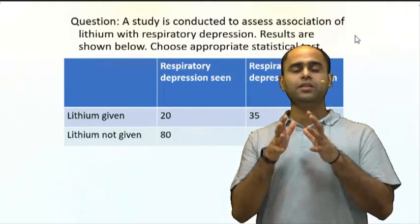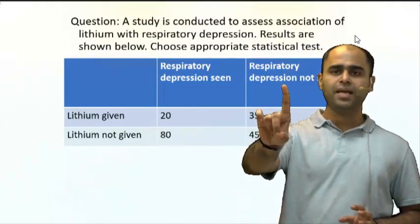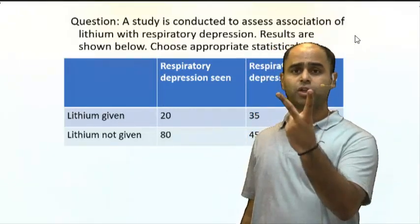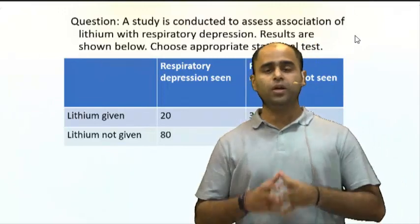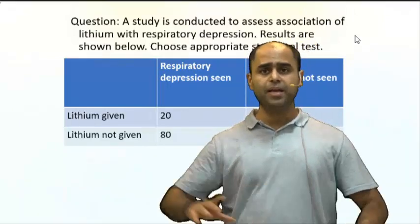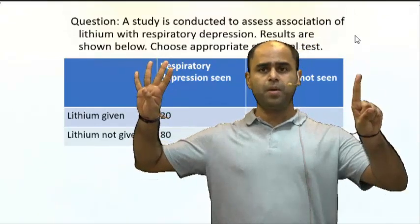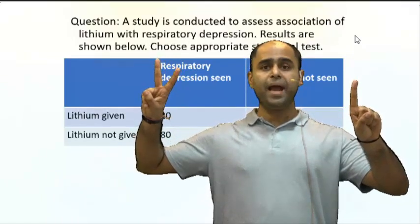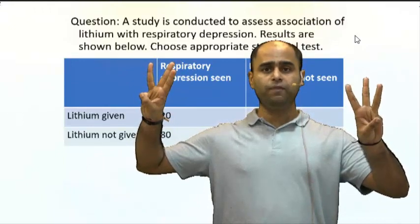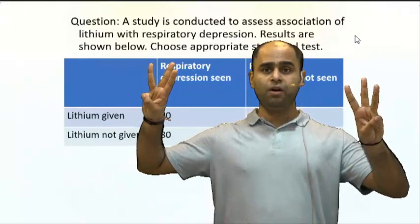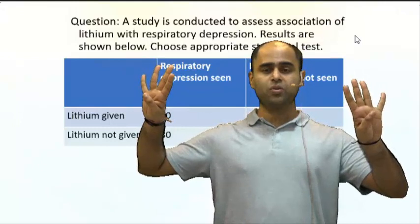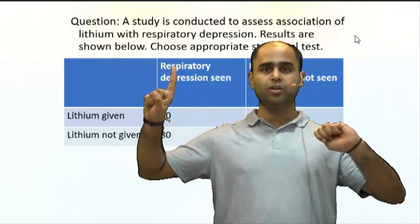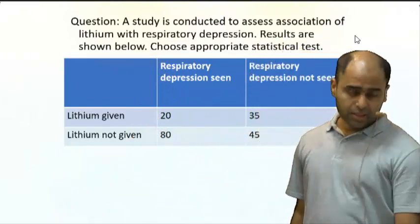Third step: the output variable — quantitative or qualitative. This is important because when the output variable is qualitative you use algorithm one, and when it is quantitative you use algorithm two. To summarize the four steps: number of groups, paired or unpaired, output variable type, and then algorithm one for qualitative or algorithm two for quantitative.